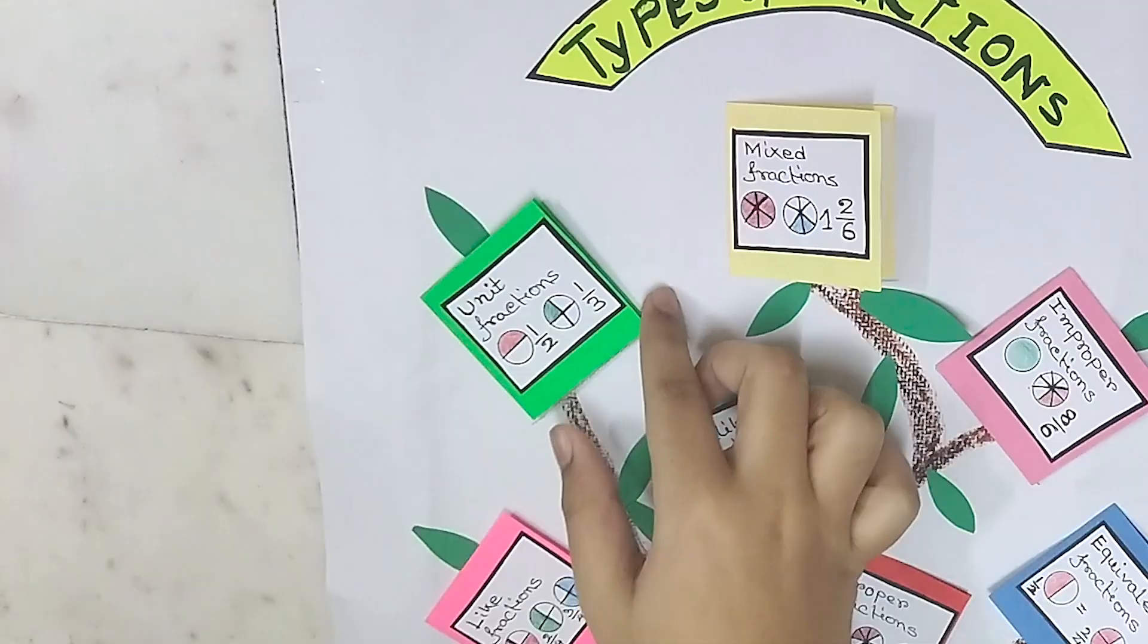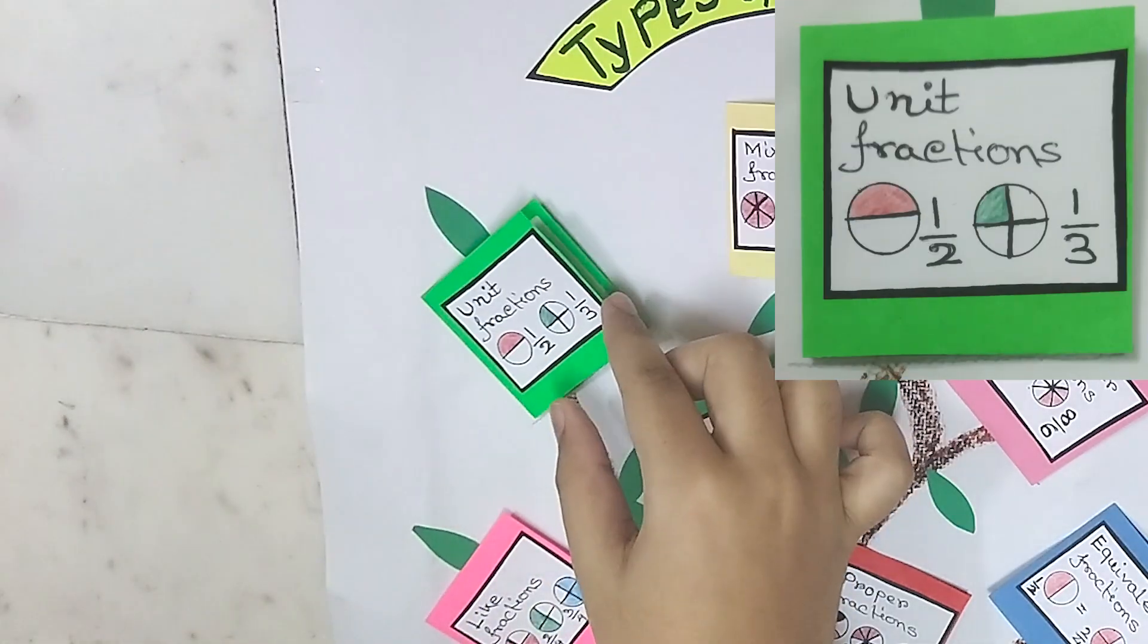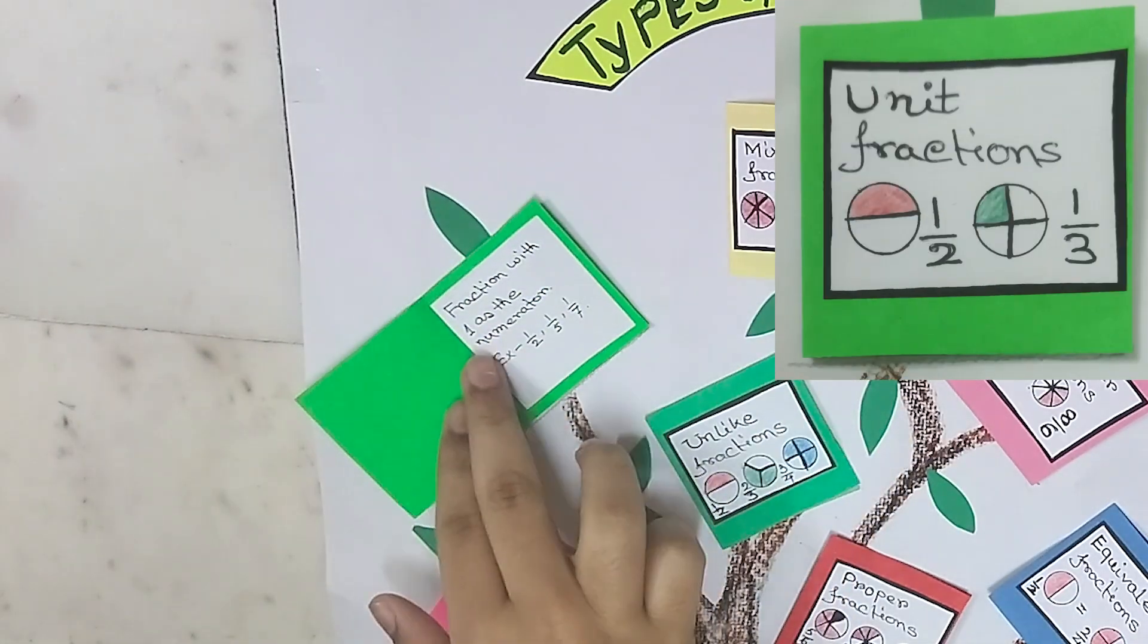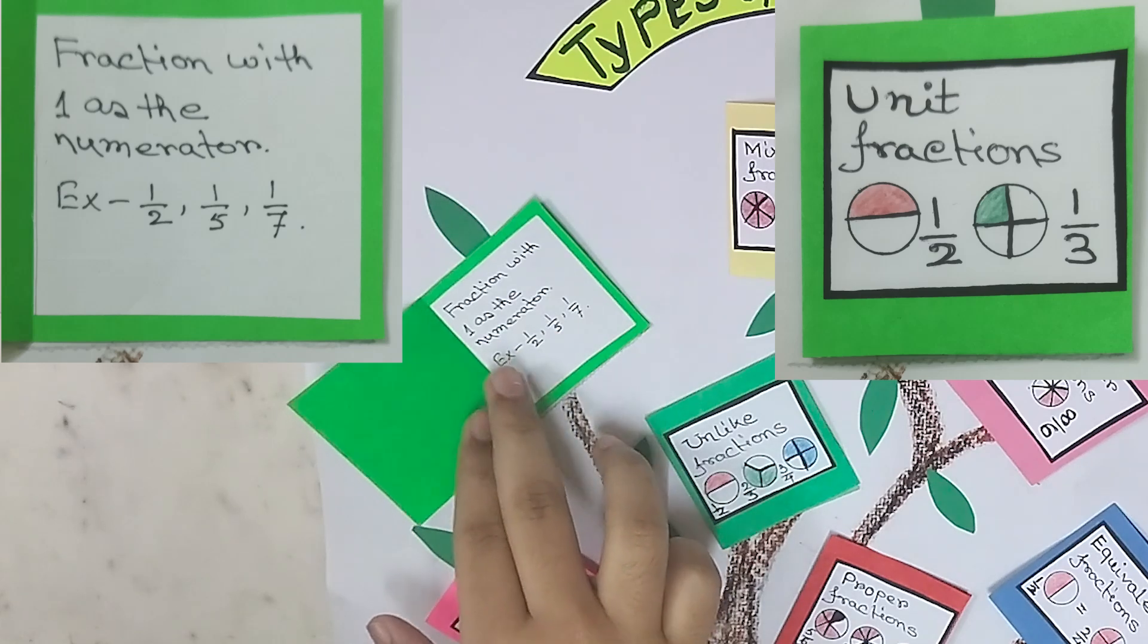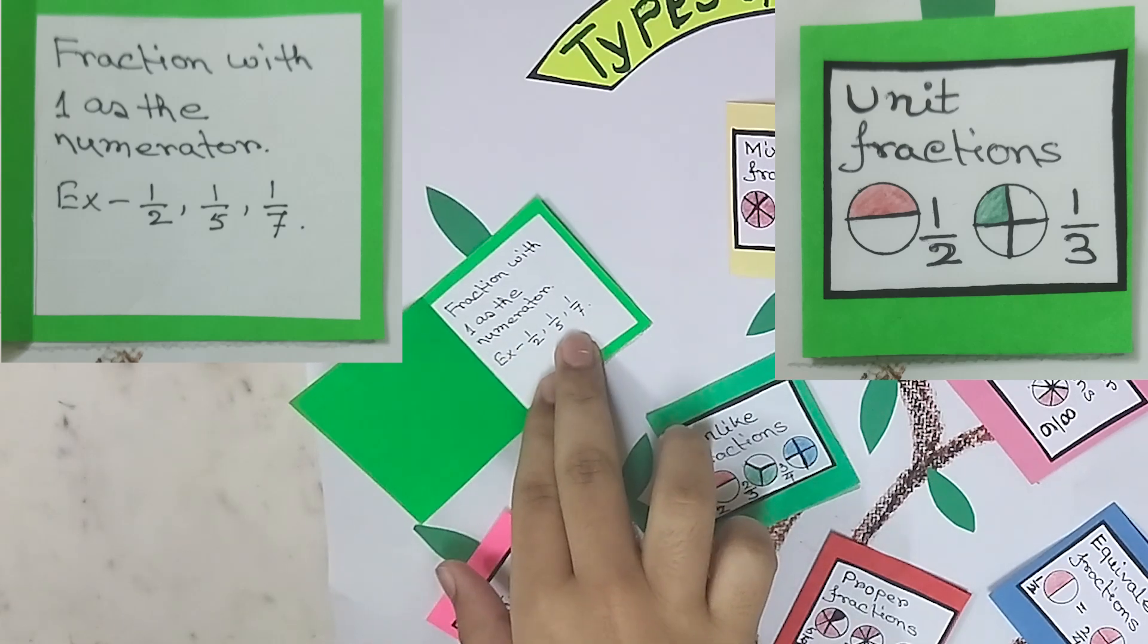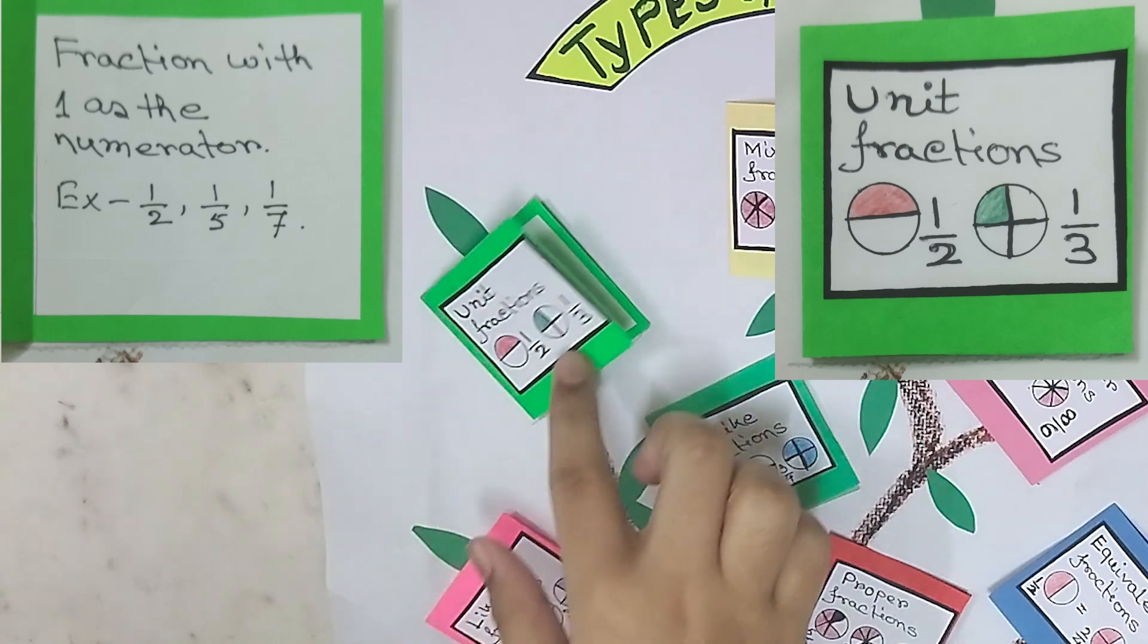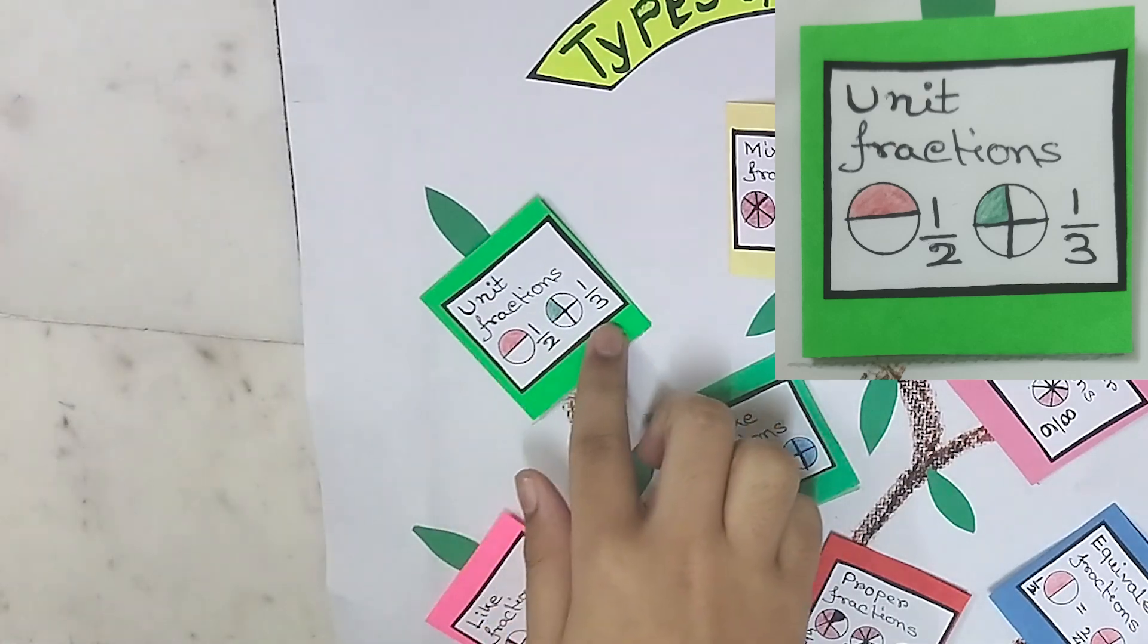There are seven types of fractions. First one, unit fractions. Fractions with one as the numerator. One by two, one by five, one by seven. As you can see here, one by two and one by three.